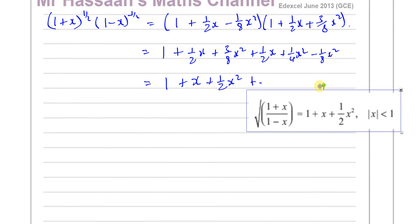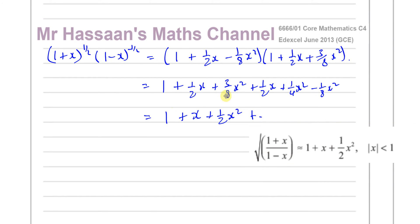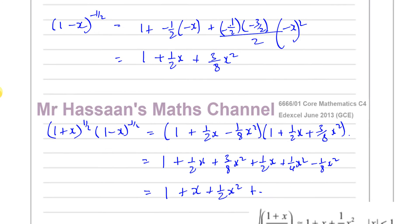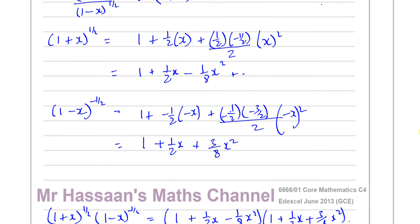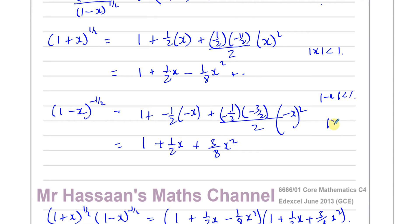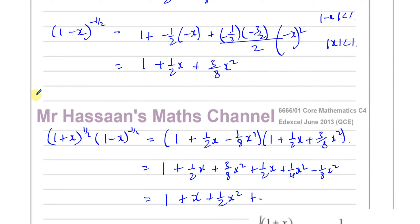Regarding the condition that the modulus of x is less than 1: when you have an expansion like this, whatever is inside the bracket must have modulus less than 1 for the expansion to be valid. For the first expansion modulus of x must be less than 1, and for the second modulus of minus x must be less than 1, so in both cases modulus of x must be less than 1. These are called infinite expansions, and that's part A done.